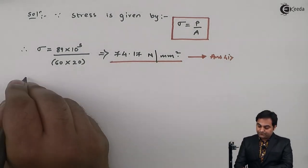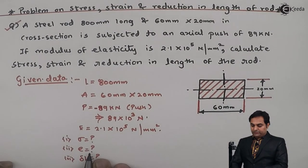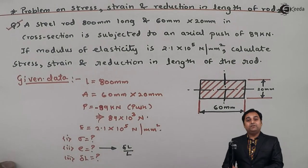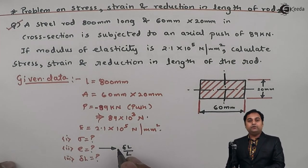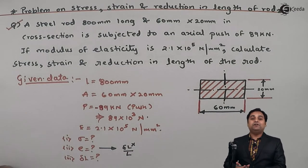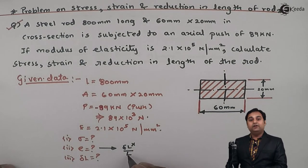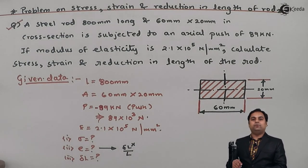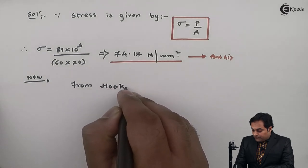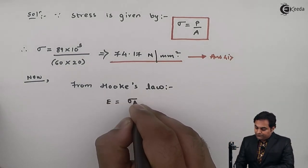The second question is strain. If we want to calculate strain, the formula is change in length upon original length. But here we don't have change in length — that is another question to find — so strain cannot be calculated by this formula. In this case, we can calculate strain using another formula derived from Hooke's law. From Hooke's law, strain = stress / Young's modulus.